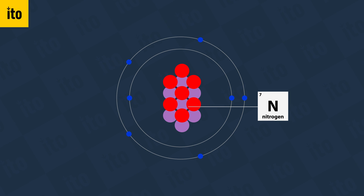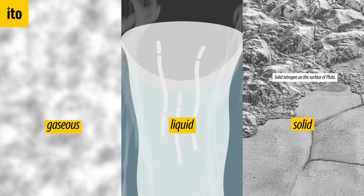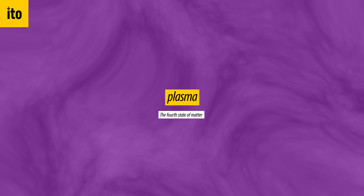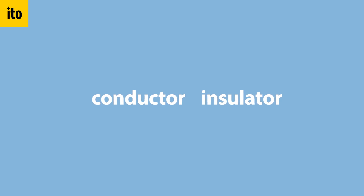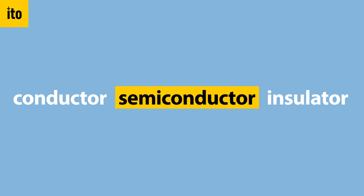Nitrogen is a good example. In almost all its forms, it doesn't conduct electricity, or heat for that matter, very well. However, if you manage to heat up nitrogen sufficiently enough, it can conduct electricity as a plasma. Materials do exist in the space between conductors and insulators.